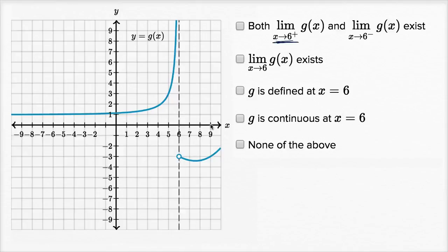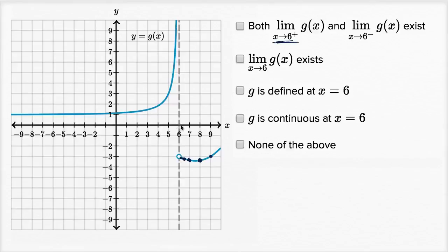Looking at the graph: g of nine, g of eight, g of seven — these are between negative three and negative four. g of six point five looks like it's a little bit closer to negative three. g of six point one is even closer to negative three, and g of six point zero one is even closer to negative three. So it looks like the limit from the right-hand side does exist.